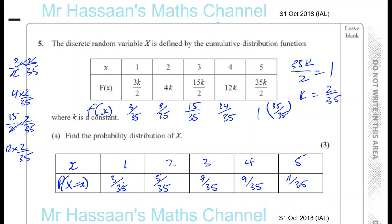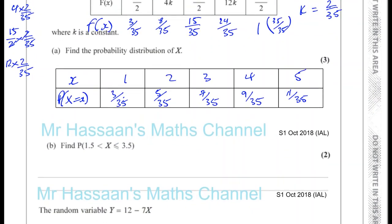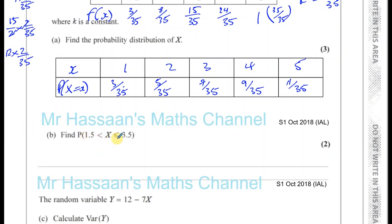Part B says, find the probability that X is between 1.5 and 3.5. Now we're talking about discrete random variables, we're talking about these whole number of values, these particular values. We're not caring about anything between these values. So what are the values of X which are between 1.5 and 3.5? Well, there's only 2 and 3. They're discrete values.